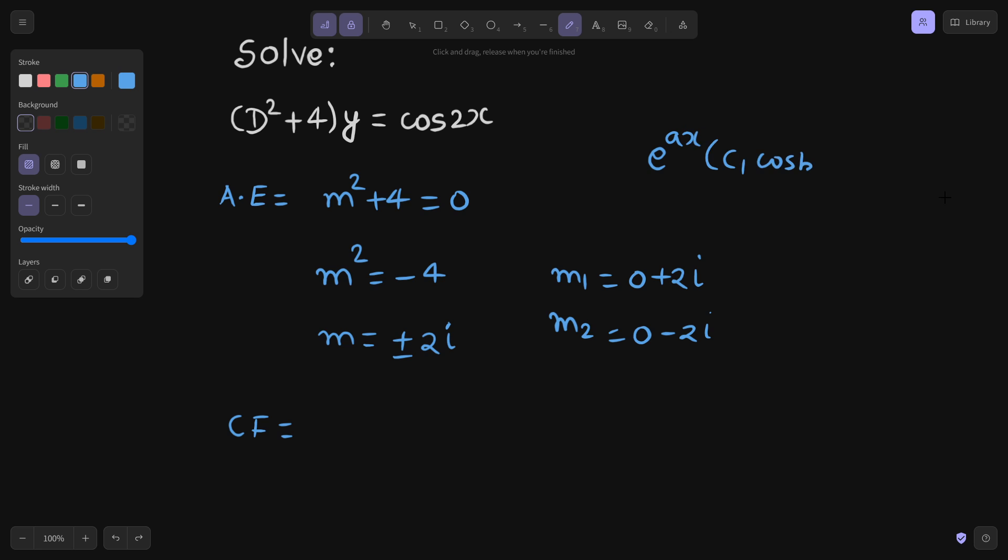If I compare it to A plus minus b iota, as you can see A here is 0, so e^(0x). Constants I am taking as C1, C2 here. So C1 cos, b here is 2, so 2x plus C2 sin 2x.